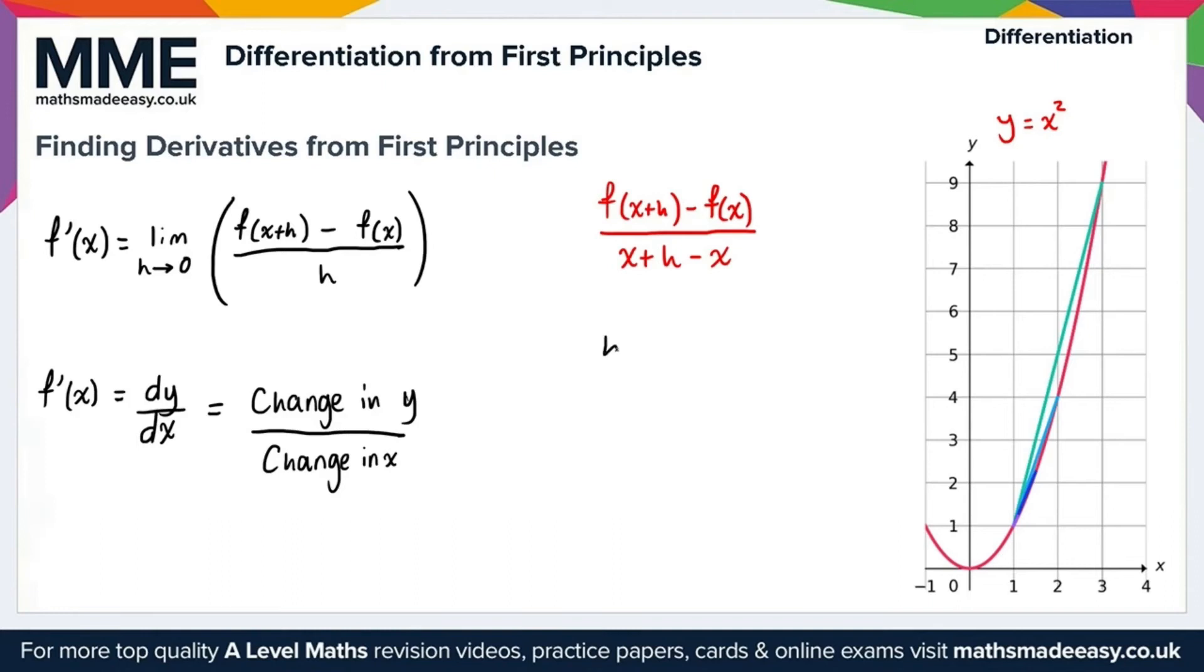When h is 2, that gives us this first green line here. And what that gives us is f prime of x equals 4. Now, this light blue line here is when h equals 1, so this is equal to 3.